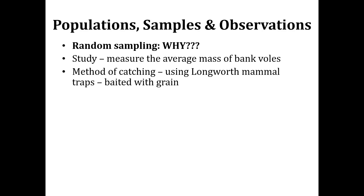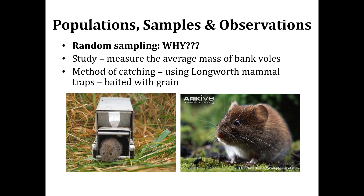First we will see an example where bias is present. The study measures the average mass of bank voles — small rodents — and the method of catching them is using Longworth mammal traps baited with grain. Here are pictures of bank voles and the Longworth mammal trap baited with grain. Because we want to capture animals alive and unharmed, we use these traps, and this trap is baited with grain.